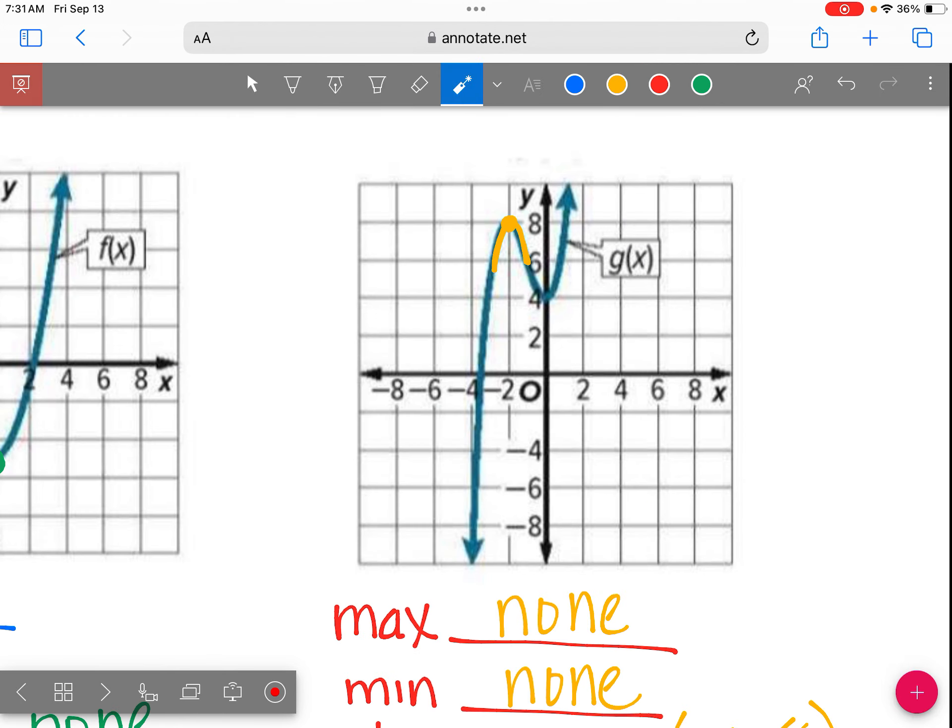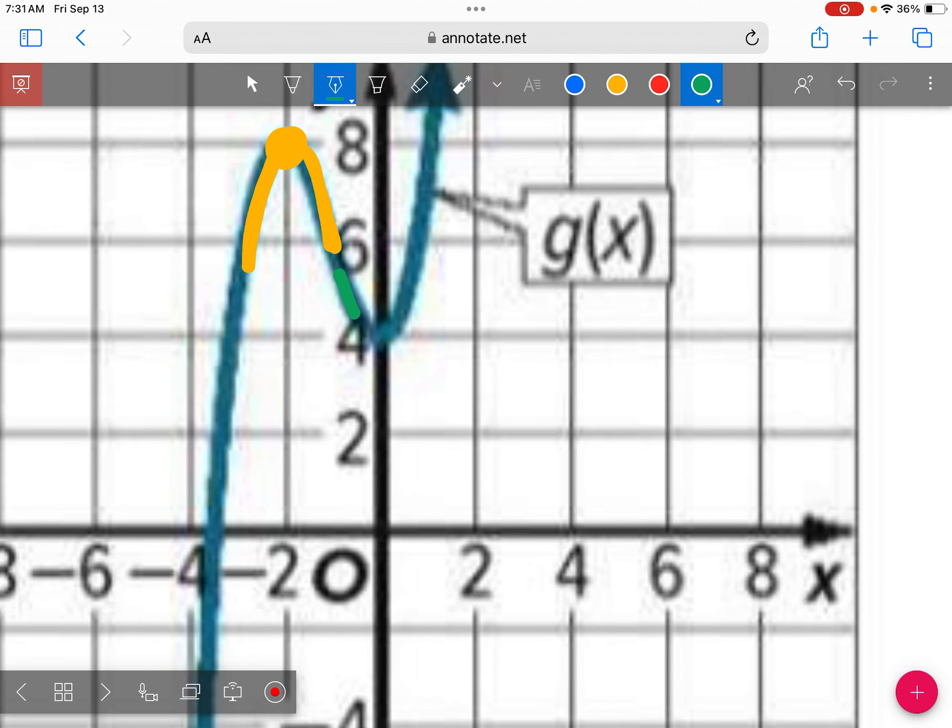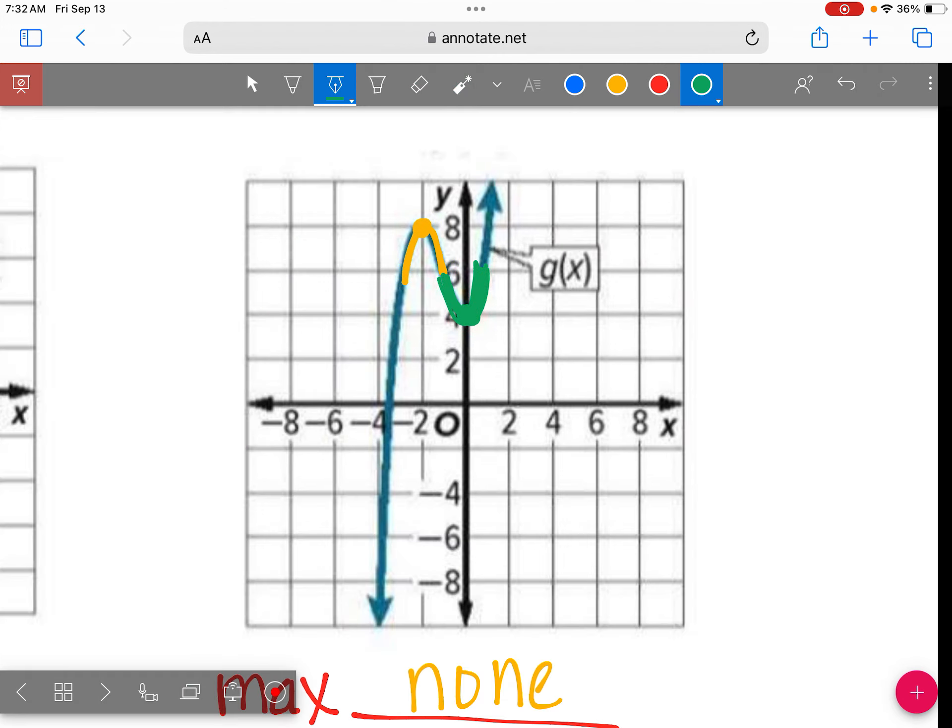And then if we continue to trace our graph, we see there is a place where it is going down and it makes a U-turn to go back up. So here, this is a relative min. See where we have that little frown right there? Any place you have a frown, that means we have a relative min. Sorry. Let me say that again. Any place we have a smile. A smile means we have a relative min and a frown means we have a relative max. So here is my smile. And that would be at zero four.